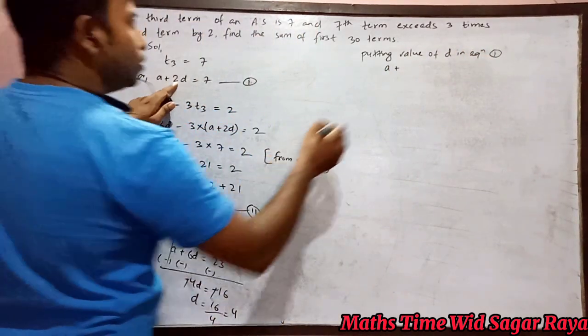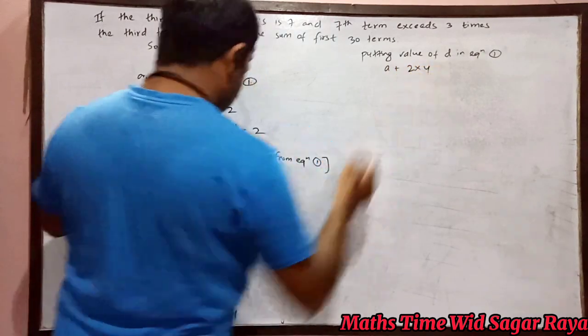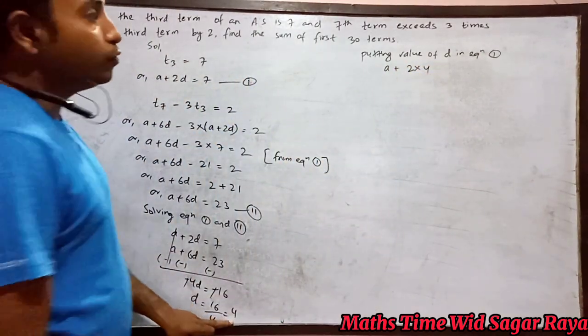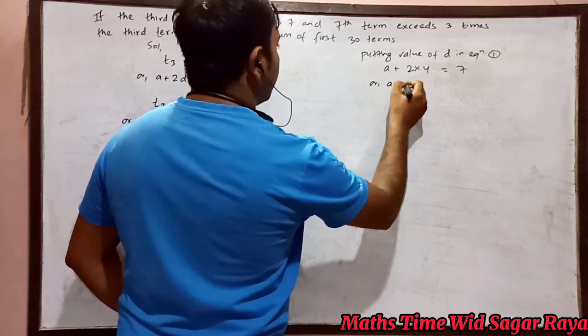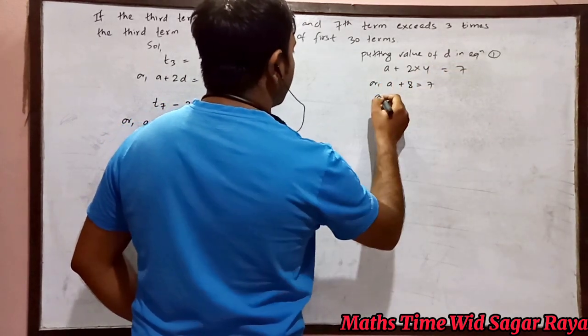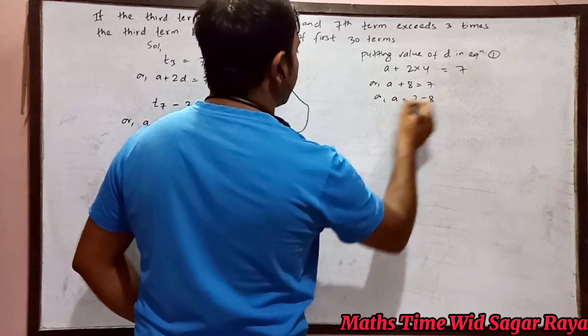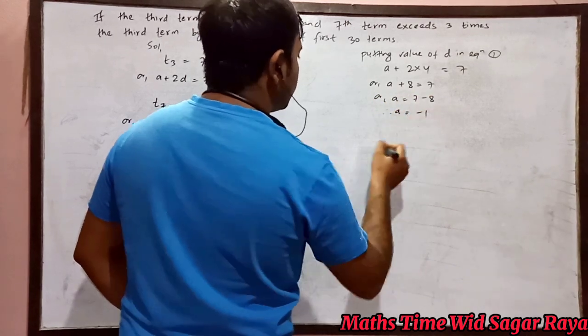Now putting value of d in equation 1. So a plus 2d, where 2d means 2 times 4, equals 7. Or a plus 8 equals 7. Or a equals 7 minus 8. So a equals minus 1.